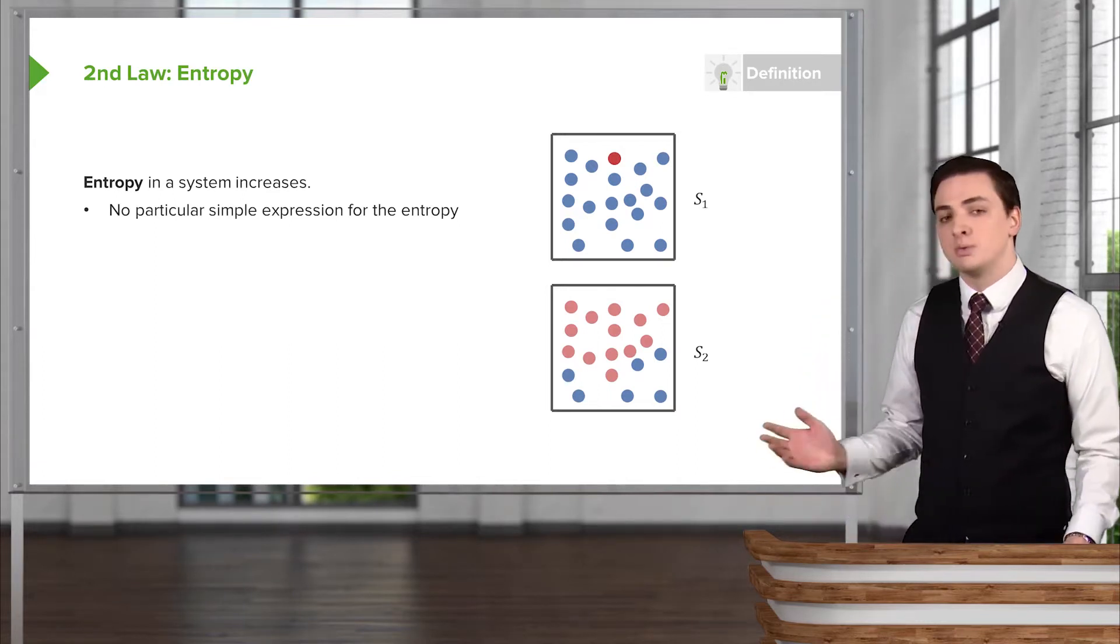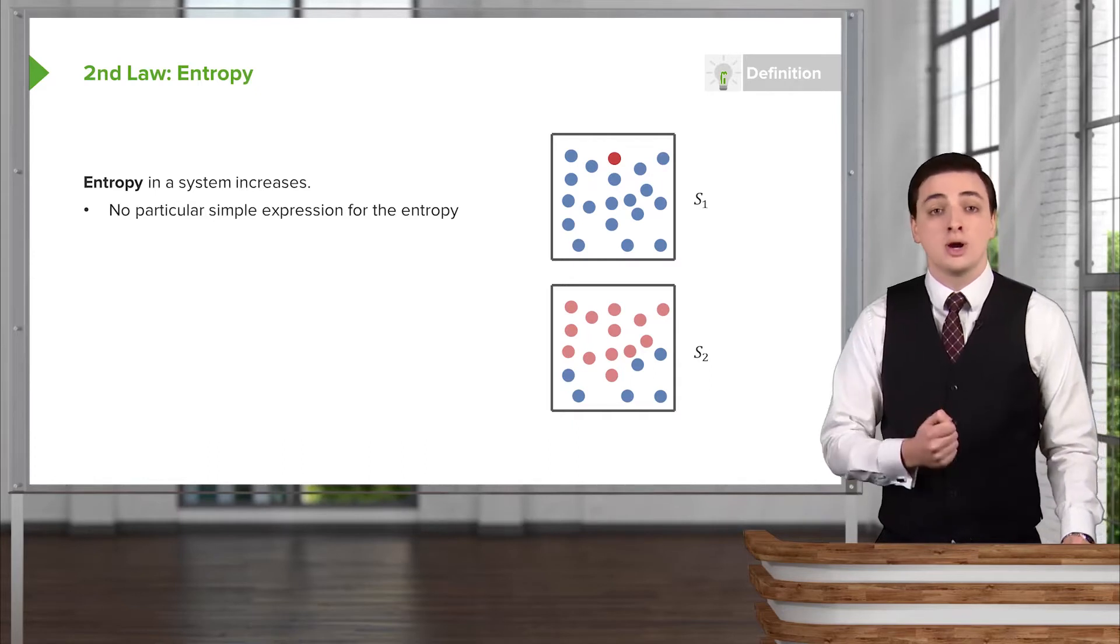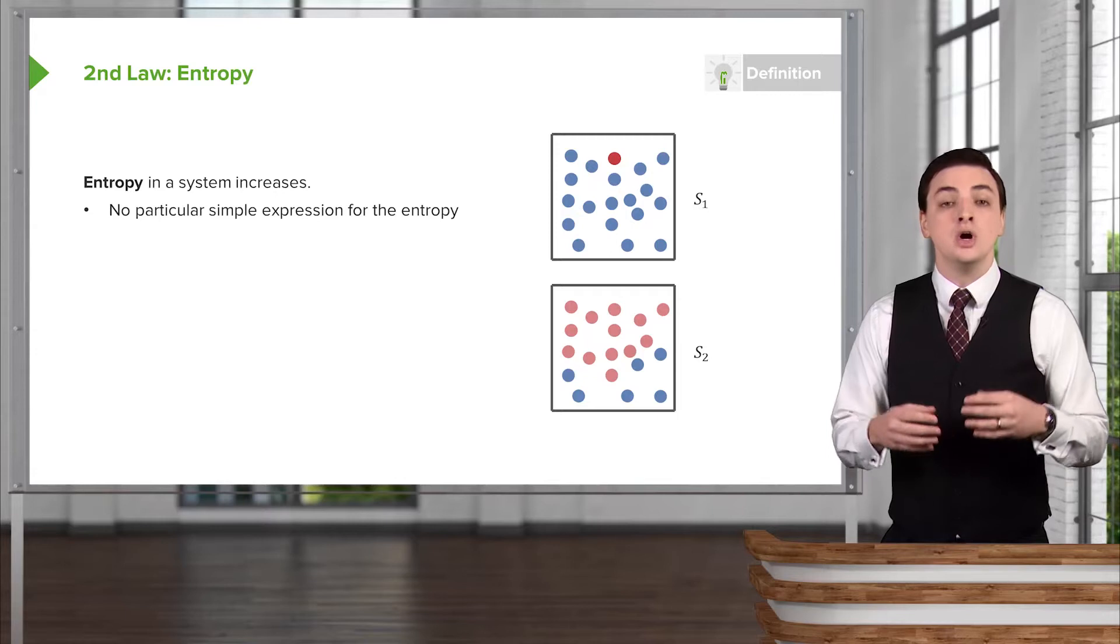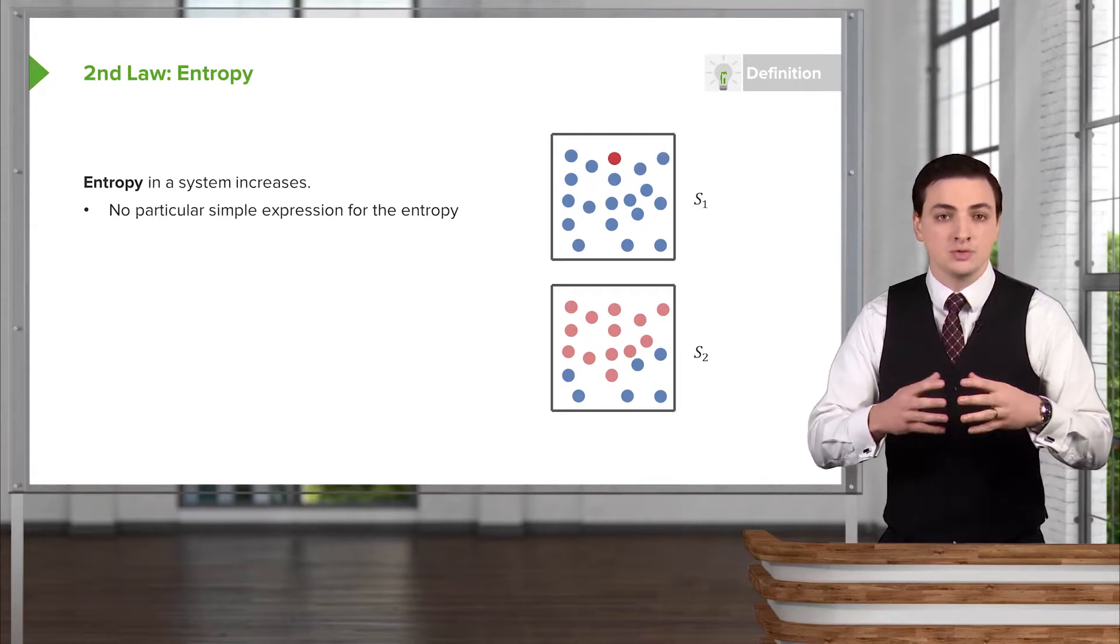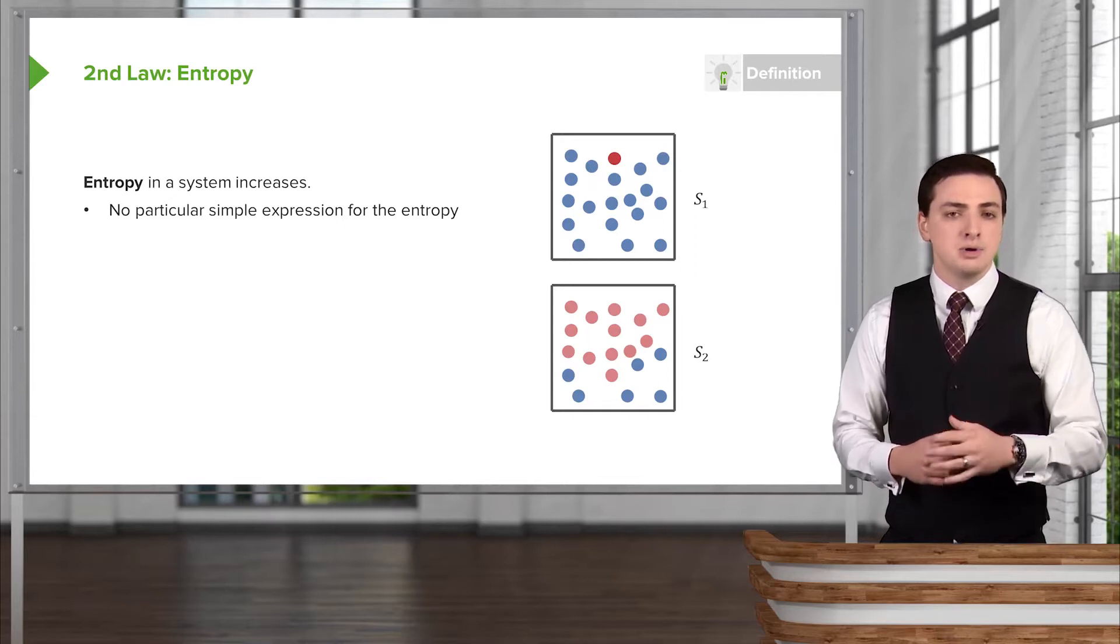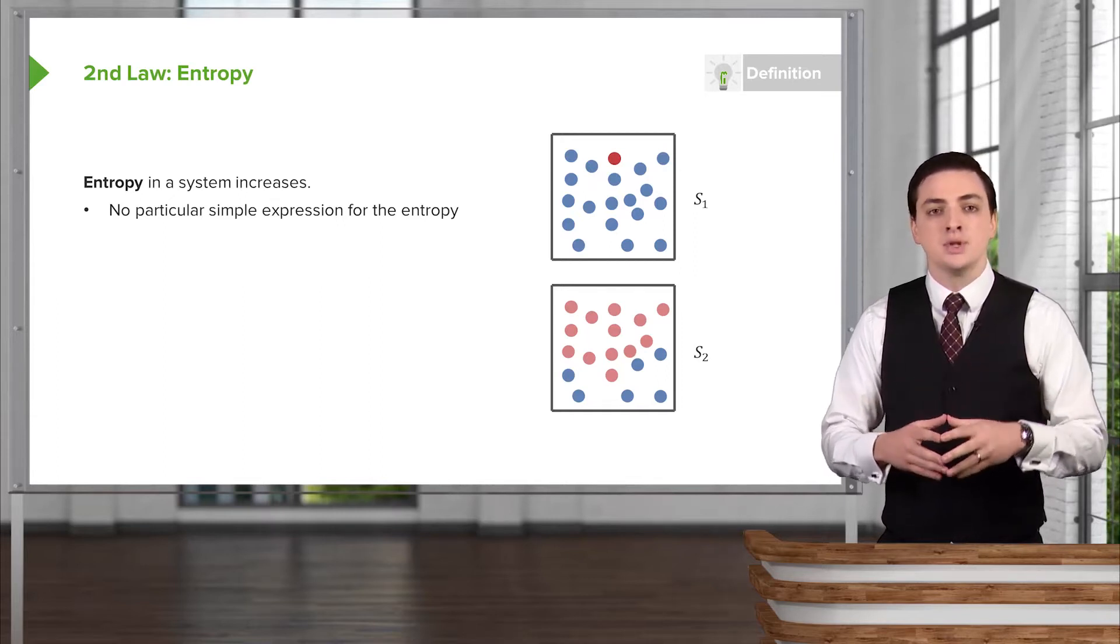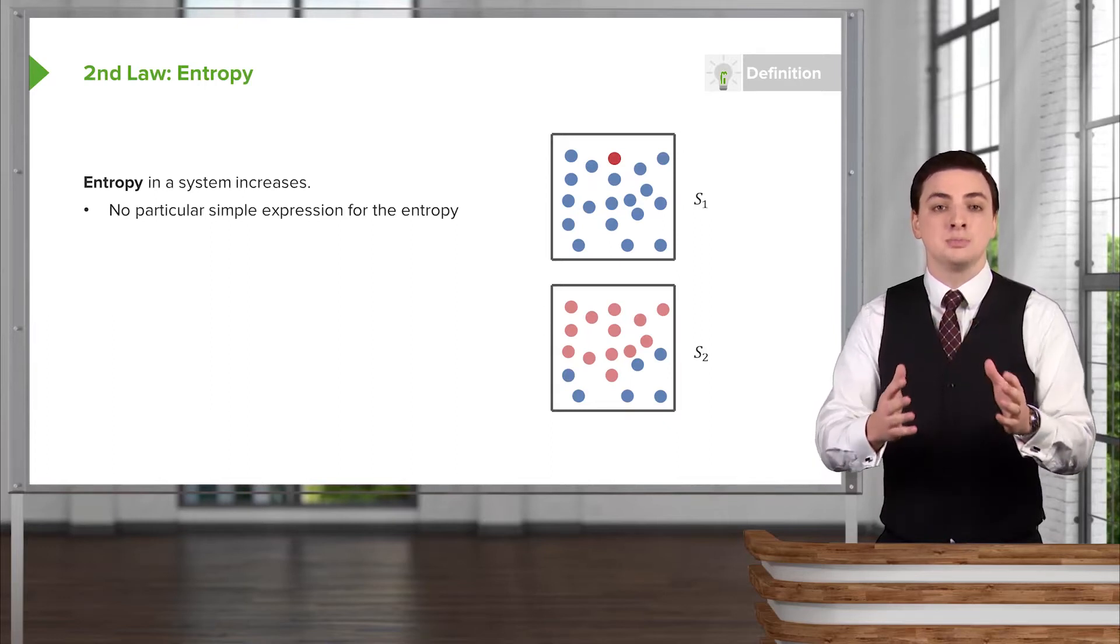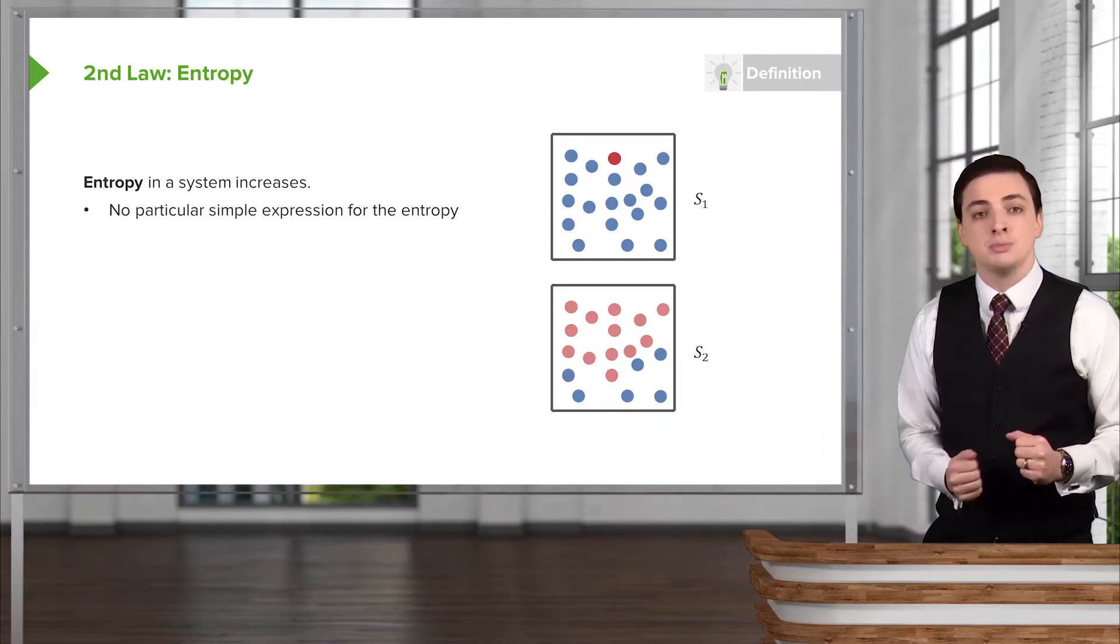For example, if I showed you a system like the one we have here, where you have maybe one particle or one part of your system is a lot hotter than the rest of the system, we already know that that energy, just from our own intuition, would spread out. The more heated particle would interact with the things around it and transfer that energy to different parts of the system, and that heat would start spreading through the system, as you can see in the lower picture here.